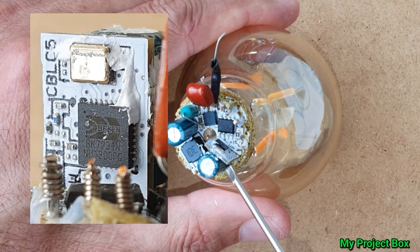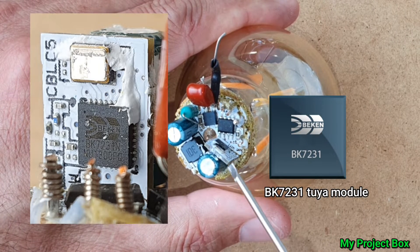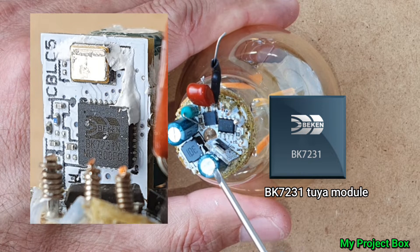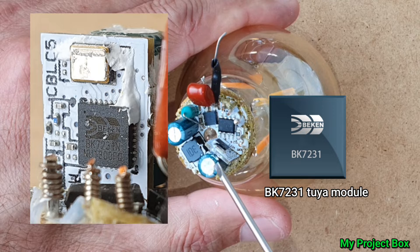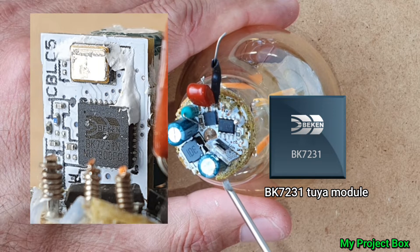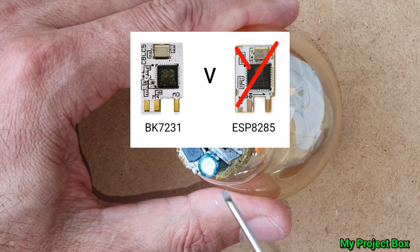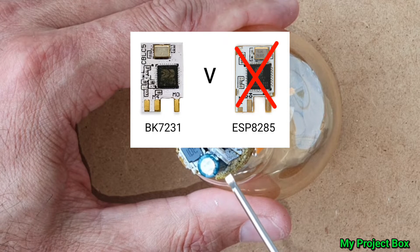And it's not an ESP Wi-Fi module. It's BK something. One that's becoming quite popular with a lot of smart bulbs. They seem to be steering away, some of them are seeming to steer away from the ESP-style chips.